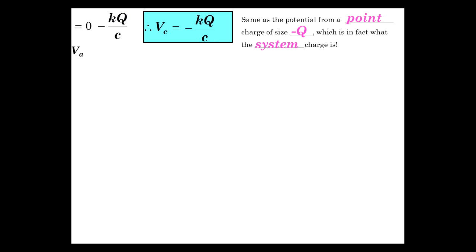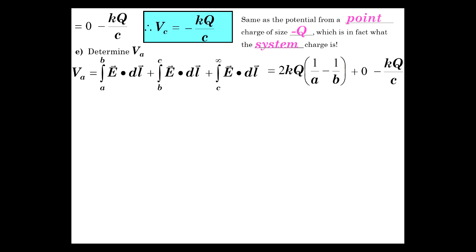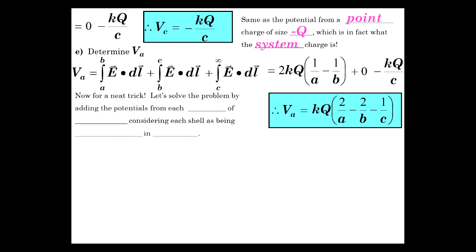Now determine V_a, the potential at location a. Well, that is a to b plus b to c plus c to infinity, which is 2kQ times 1 over a minus 1 over b plus zero minus kQ over c. So we can just do the algebra.